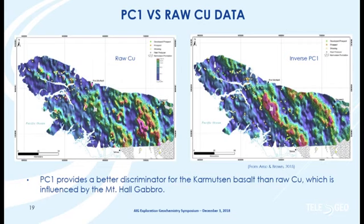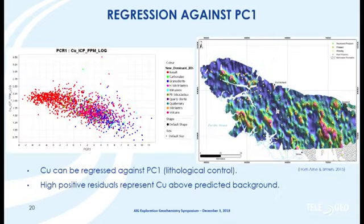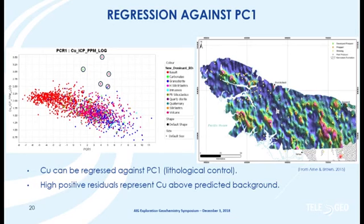Now that we've characterized the Karmutzen basalt and the copper associated with it, we can do a regression analysis of copper against that principal component. Here are the basalts with strong negative loadings, and the felsic ones — that's all background. The interesting samples are the copper anomalies that can't be explained by lithology. We then plot up a map of the residuals — copper that can't be explained by the Karmutzen. We get the Mount Hall Gabbro coming through, but also we're starting to pick up a lot more of the known copper occurrences.